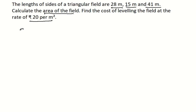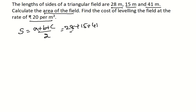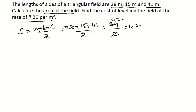Using the given sides, we need to find the s value. S equals a plus b plus c divided by 2, so that is 28 plus 15 plus 41 divided by 2. The sum is 84 divided by 2, which equals 42.